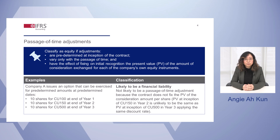One, they must be predetermined. Two, they must only vary with the passage of time. Three, they must have the effect of fixing the present value at initial recognition of the amount of consideration exchanged for each of the entity's own equity instruments. This approach ensures the difference between the amount of consideration on each settlement date represents only compensation proportional to the passage of time.